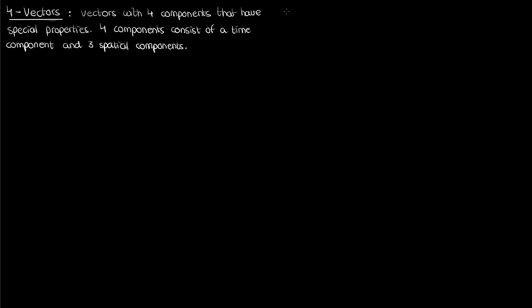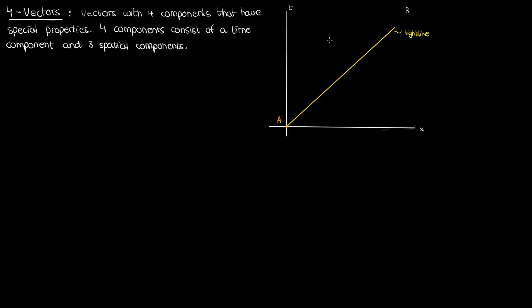Let's start by going over a classic four vector, the displacement four vector. We actually covered this in my video on the Minkowski metric, but I'm going to go over it again here. Suppose I have an inertial reference frame R, and that in that reference frame there's an event A that occurs at the origin, so time zero, and x, y, and z also zero. I've only drawn t and x here on the spacetime diagram for ease of depiction, but you can imagine there are also two other spatial dimensions. My light line is once again at 45 degrees because I'm measuring my time in light meters, the time it takes for light to travel one meter.